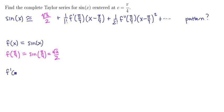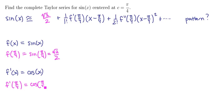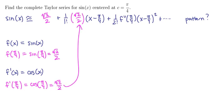Now we'll take a derivative and work on the next term. f prime is going to be cosine of x. Evaluated at π/4, we get the cosine of π/4, which is also √2 over 2. We'll stick that in as this coefficient.